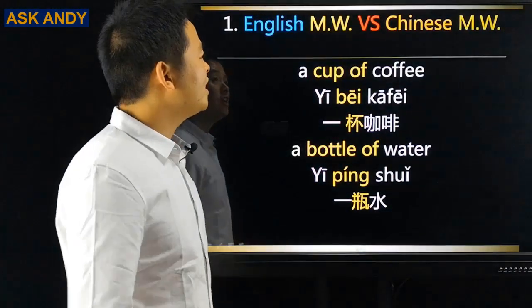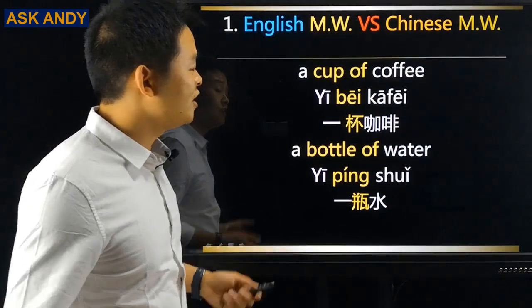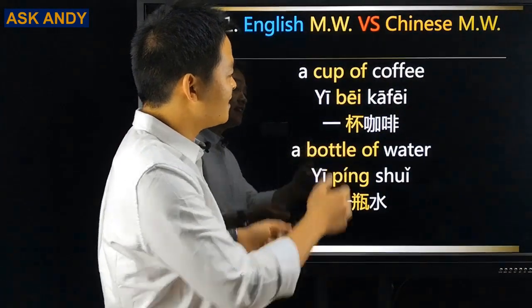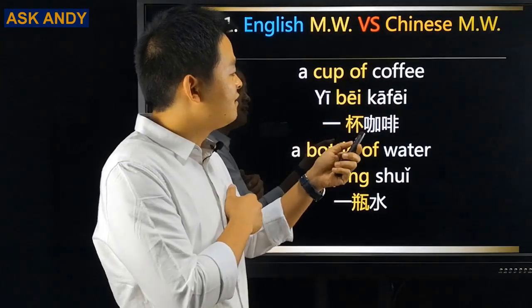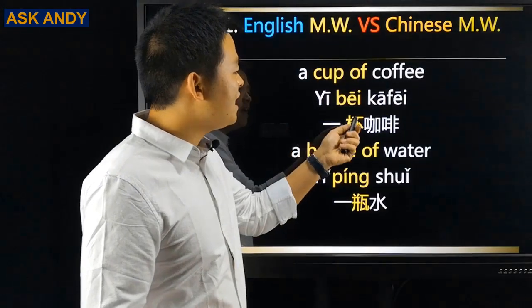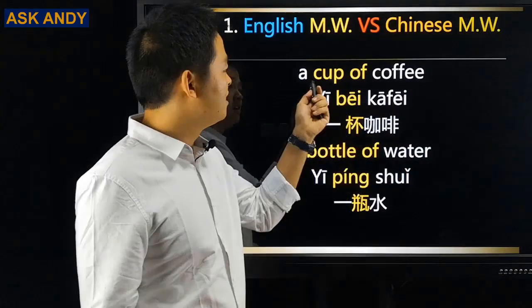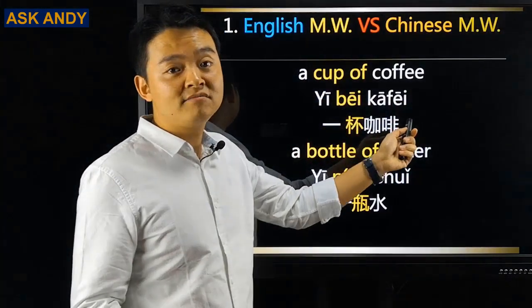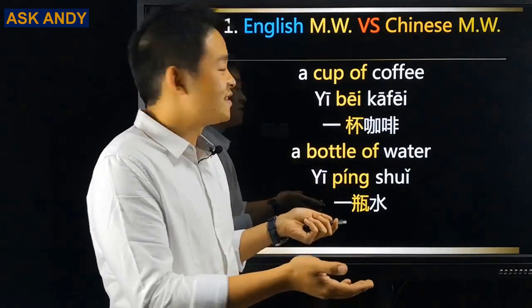Question number one: English measure words versus Chinese measure words. Let's take a look. In English, we say a noun phrase like 'a cup of coffee.' In Chinese, it is 一杯咖啡. They're almost 99% the same.